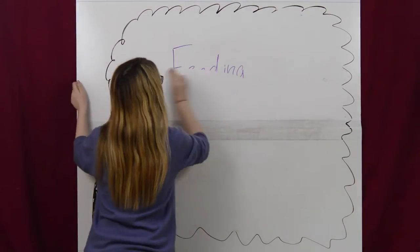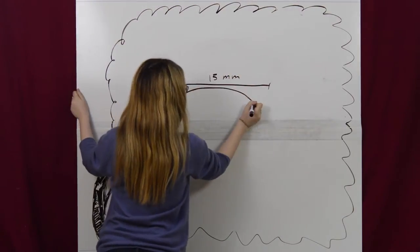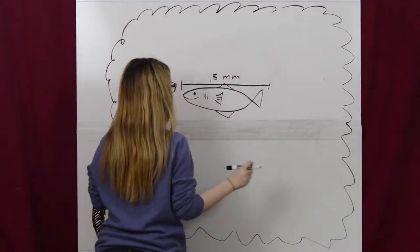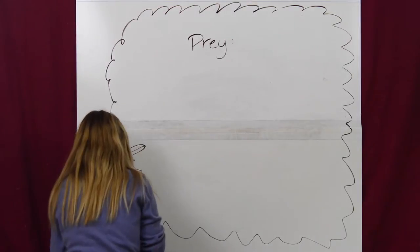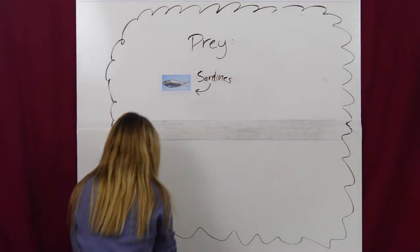Galapagos penguins are carnivorous and eat all types of small fish, typically no longer than 15 millimeters in length, and other small marine invertebrates. Prey species include anchovies, sardines, pilchards, and mullets.